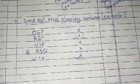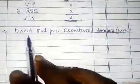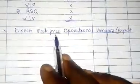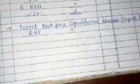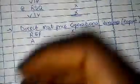Now look at the second one: direct material price operational variance, and that is called the ex-post. Here we are comparing the revised standard price with the actual price. The difference gives you the variance in price for the operational variance.